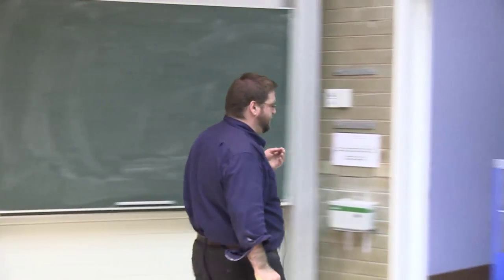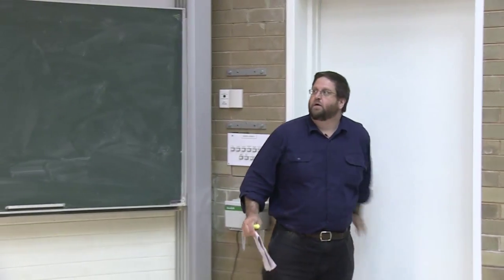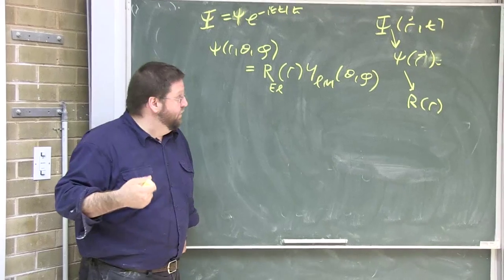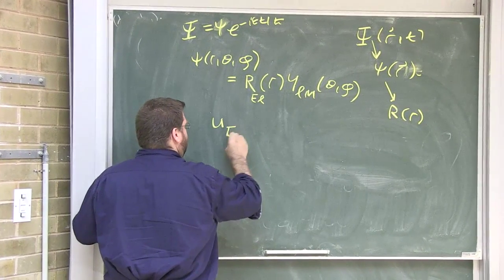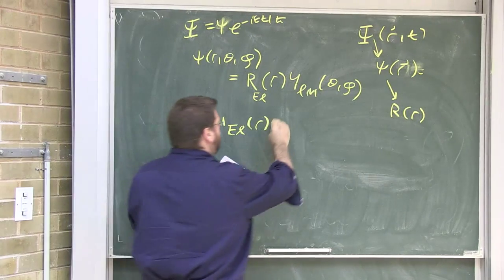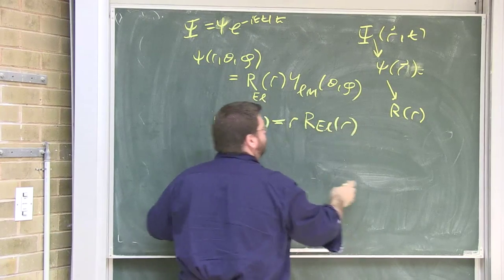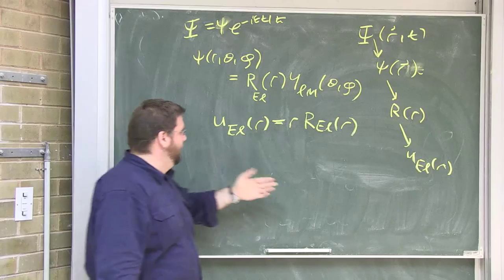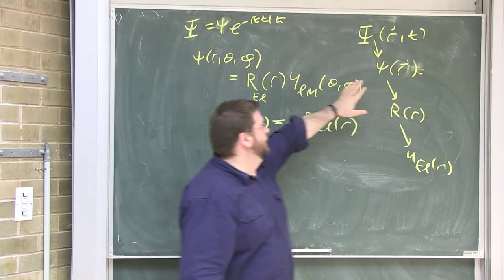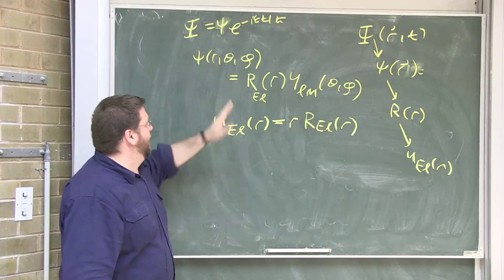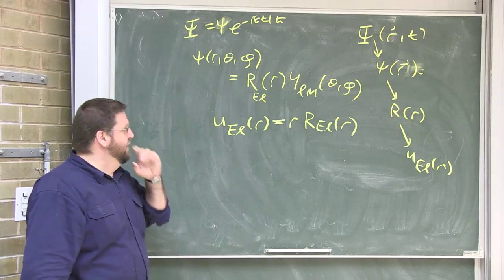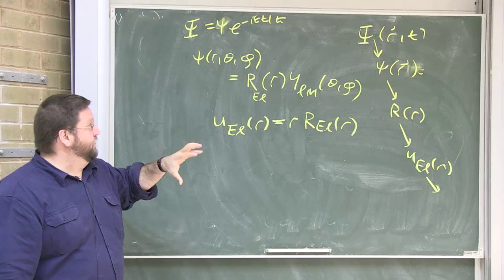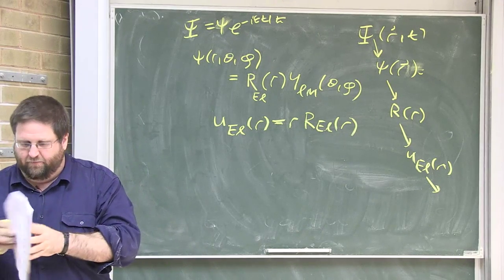Instead of solving the time-dependent Schrödinger equation for big Ψ, or the time-independent equation for little ψ, we had the radial wave equation for big R. We then made a substitution: the scaled radial wave function little u equals r times big R. There will be one more element in this five-member chain in order to work out the energy levels of the hydrogen atom.